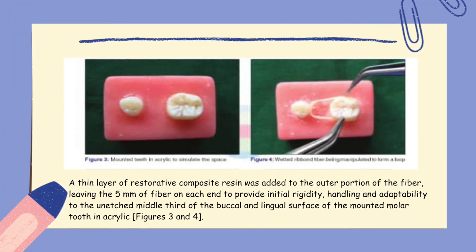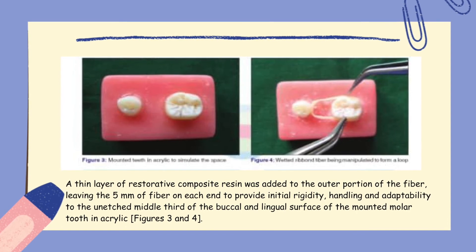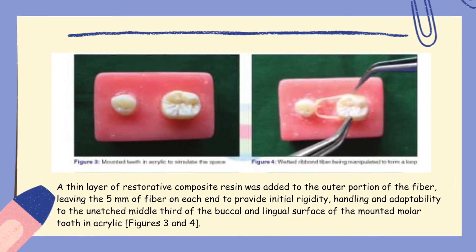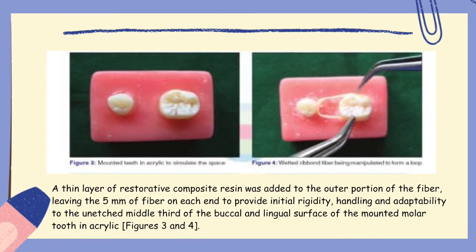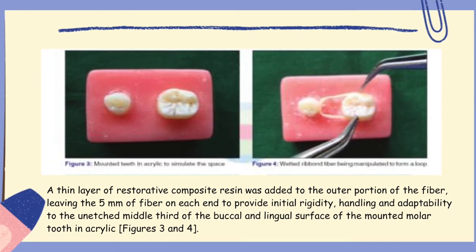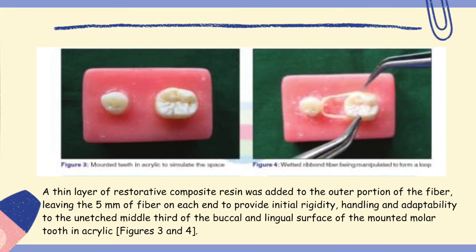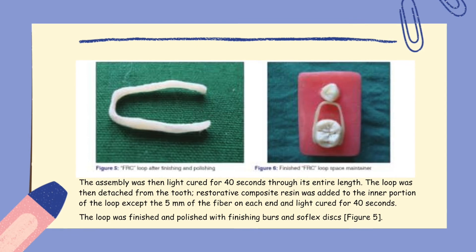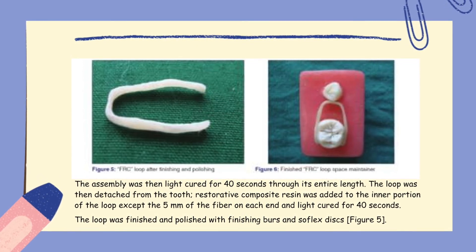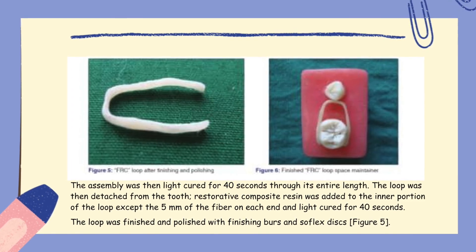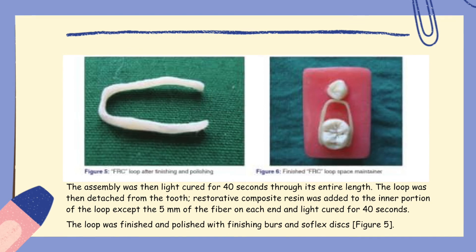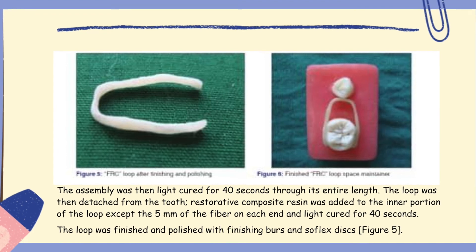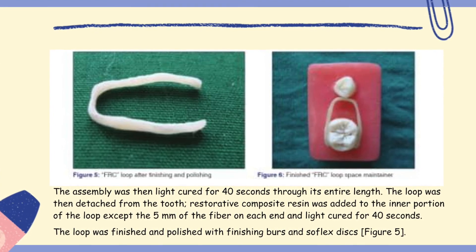A thin layer of restorative composite resin was added to the outer portion of the fiber, leaving the 5 mm ends exposed, to provide initial rigidity, handling, and adaptability to the middle third of the buccal and lingual surface of the mounted molar tooth in acrylic, as shown in figures 3 and 4. The assembly was then light-cured for 40 seconds through its entire length. The loop was then detached from the tooth. Restorative composite resin was added to the inner portion of the loop except the 5 mm fiber ends, and light-cured for 40 seconds. The loop was finished and polished with finishing burs, as shown in figure 5.